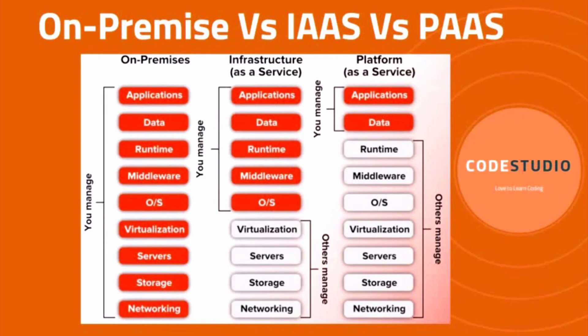The key features of IaaS are: users only have to pay on-demand rather than purchasing hardware systems. The infrastructure requirements are scalable depending on the processing and storage requirements of the enterprise. It also saves the additional cost of purchasing or maintaining hardware. Examples of IaaS include AWS EC2 instances, Google Cloud Compute Engine, and DigitalOcean.